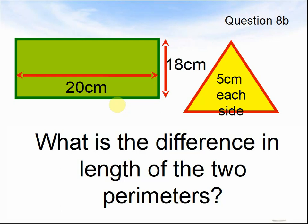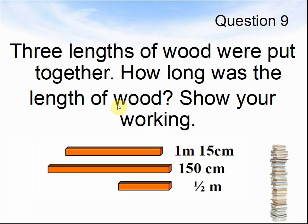Here comes question 9. Three lengths of wood were put together. How long was the length of wood? Show your working. The first piece of wood was 1m 15cm long. The second piece of wood was 150cm long. The third piece of wood was half a metre long. How long were they all together? Pause the video until you are ready for question 10.